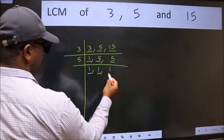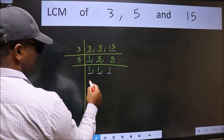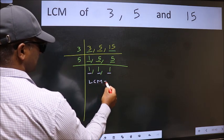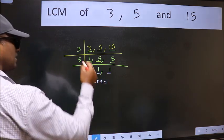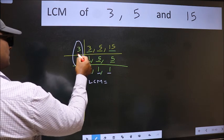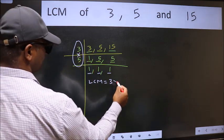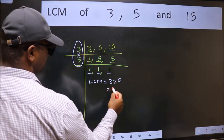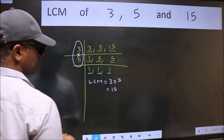So we got 1 in all three places. Our LCM is the product of these numbers, that is 3 times 5, which is 15. This is our LCM.